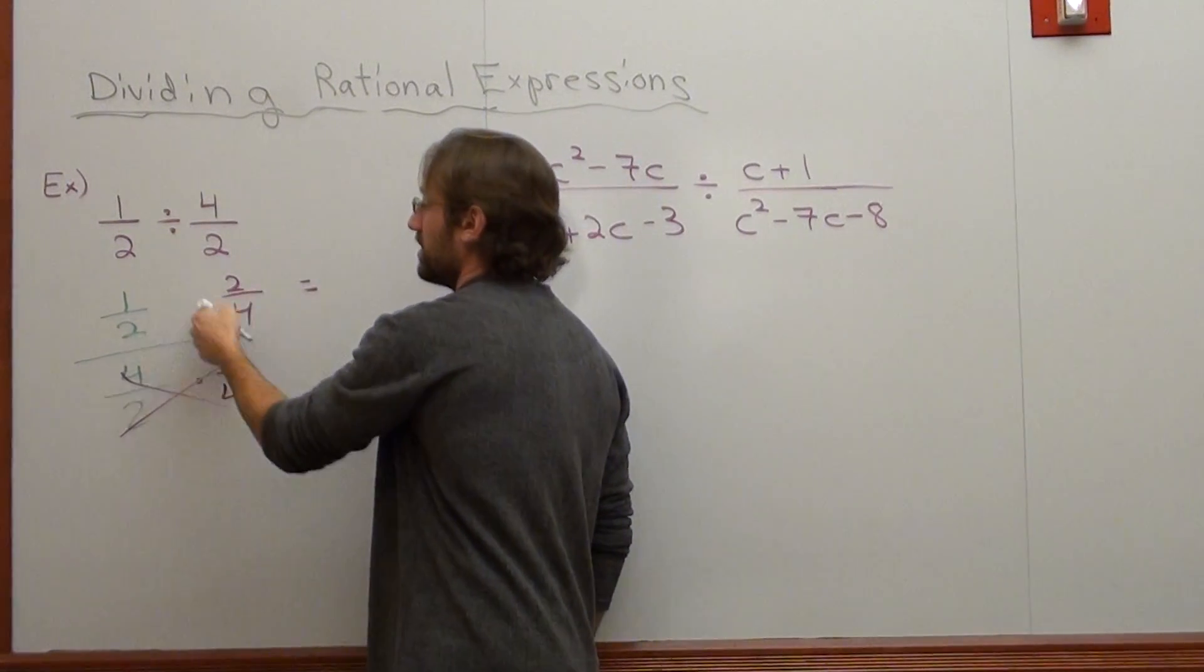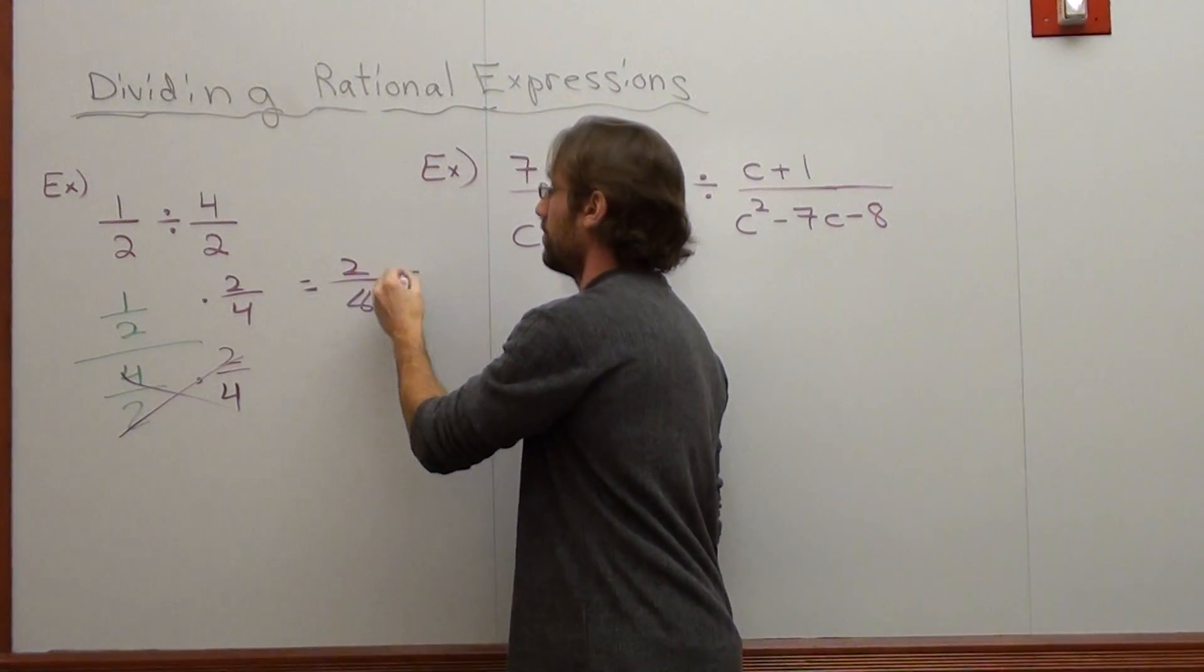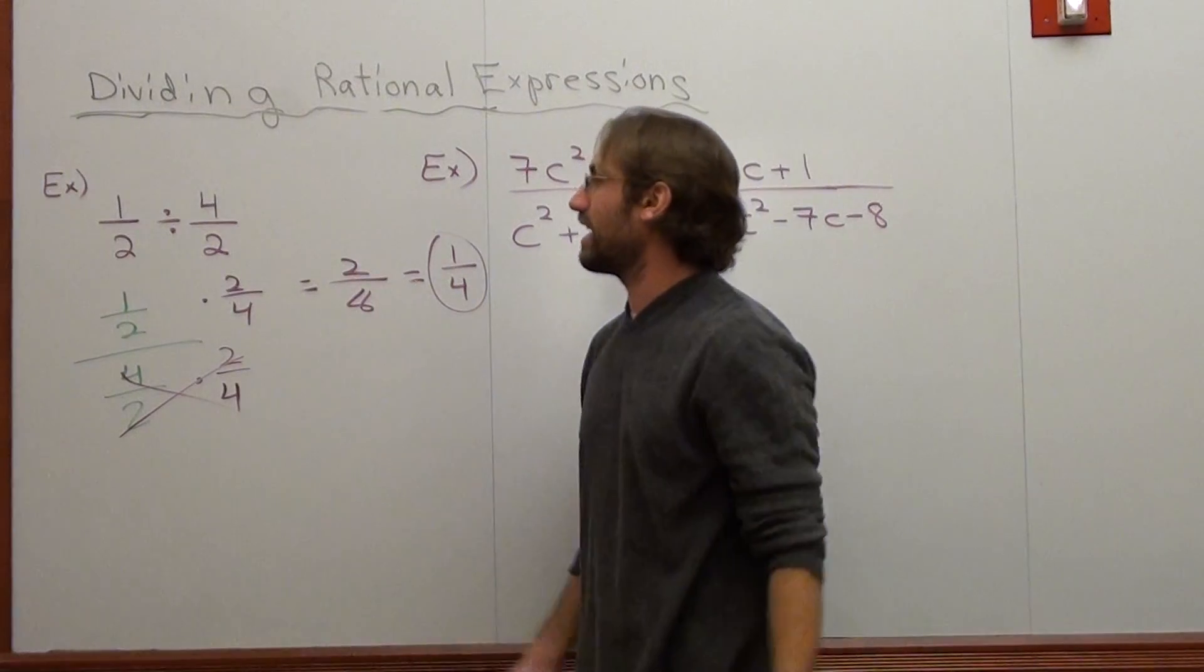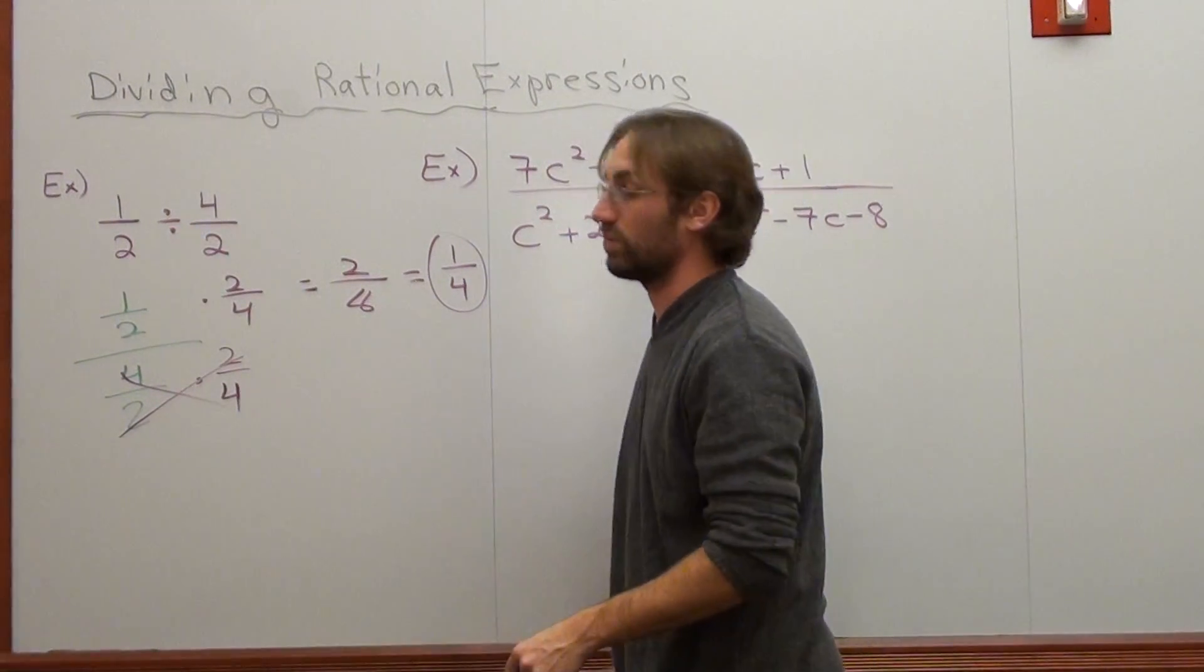So 1 times 2 is 2. 2 times 4 is 8. It turns into 2/8, which reduces to 1/4. That's basically why you turn a division to a multiplication and flip it, because it's more than one denominator.